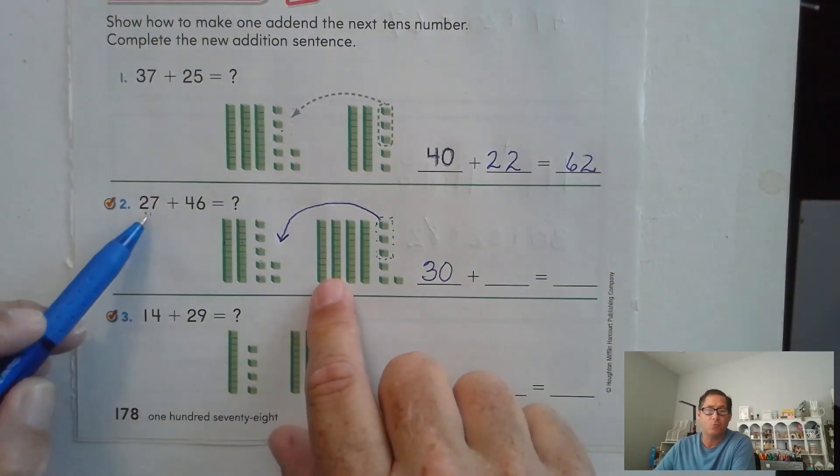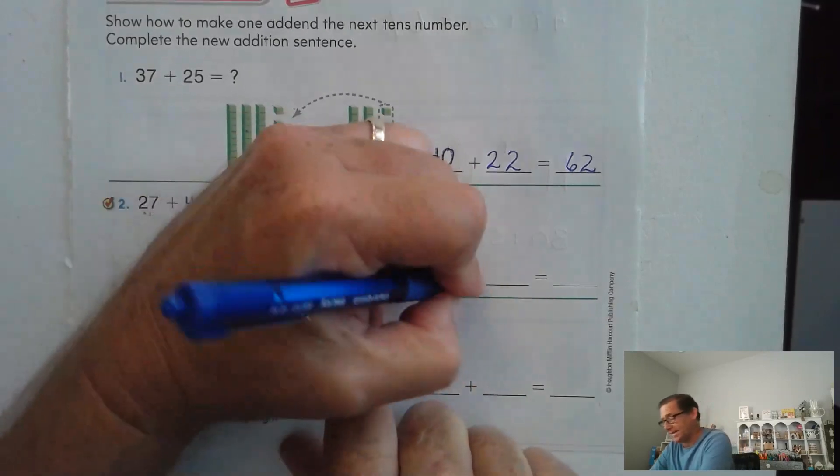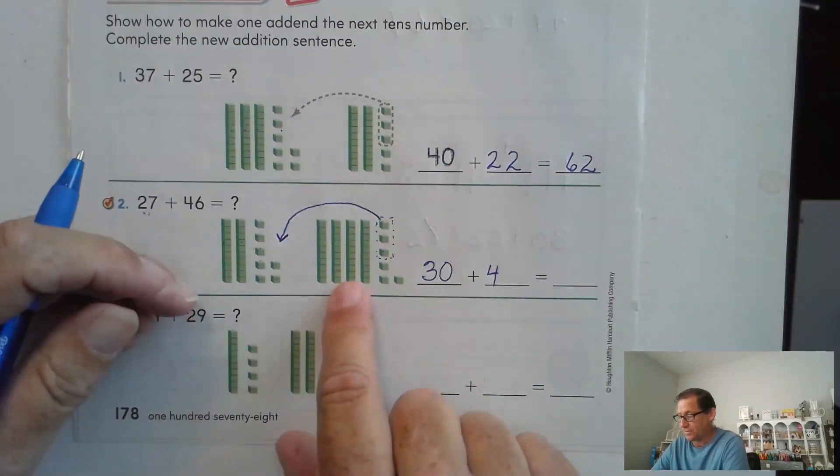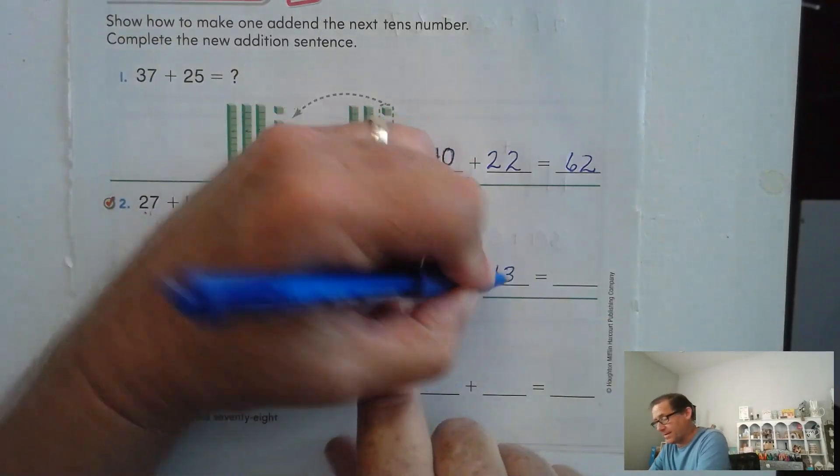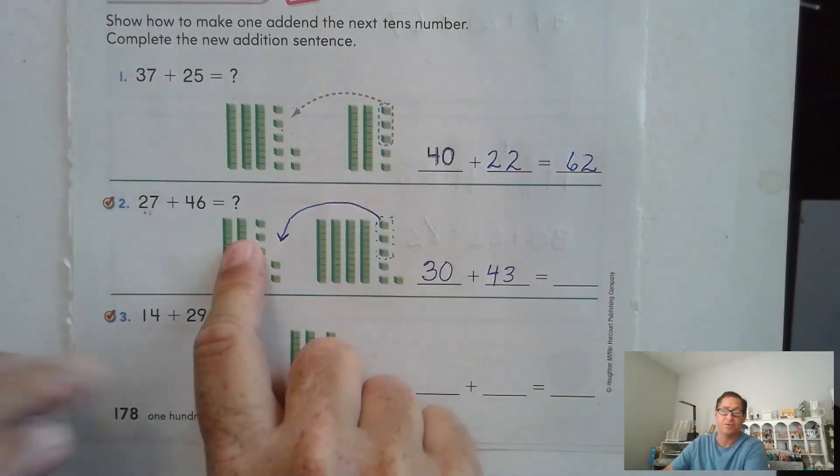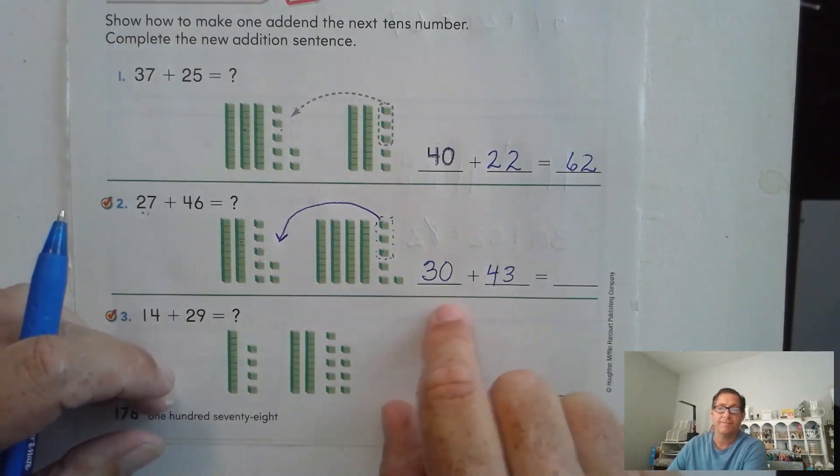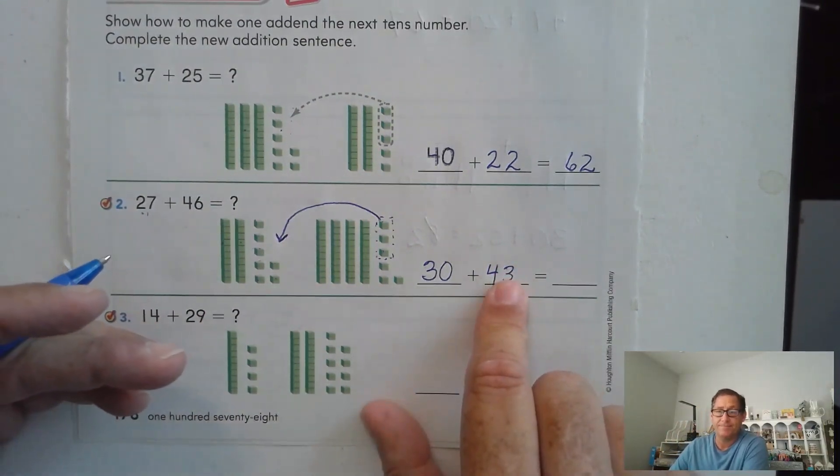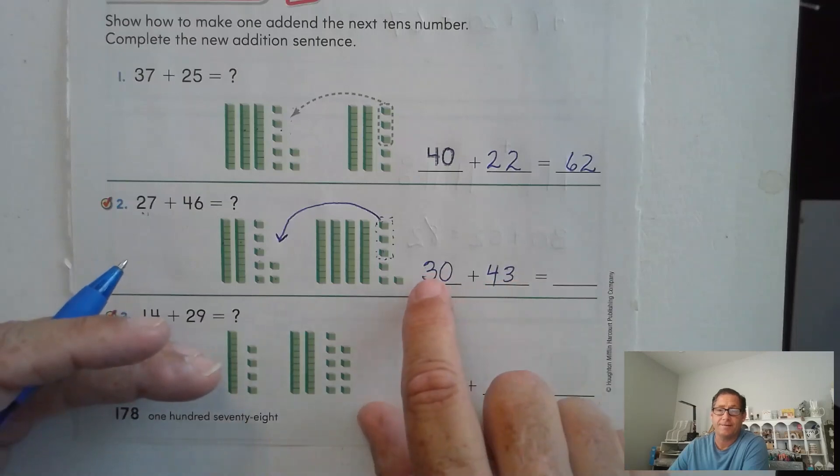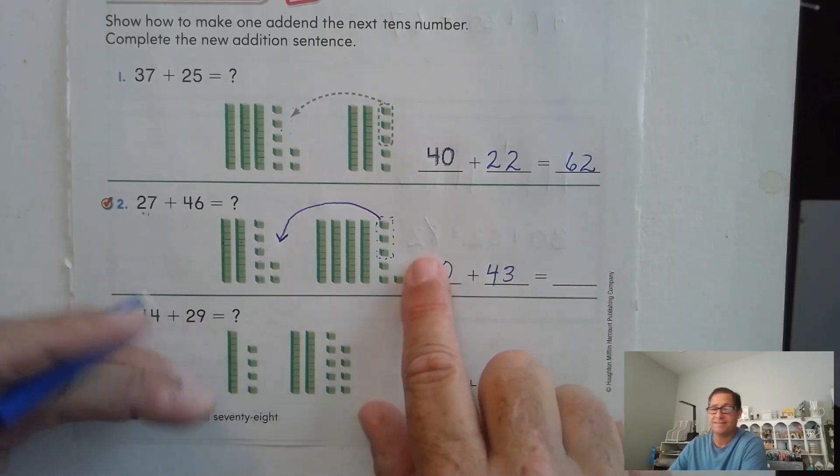So what I did was change the 27 to 30. And what's left of 46? Well, I still have the four tens, right? 10, 20, 30, 40. And now I have three ones left because I gave three to the 27. Well, now let's just count forward. We're at 43, 43, 53, 63, 73.